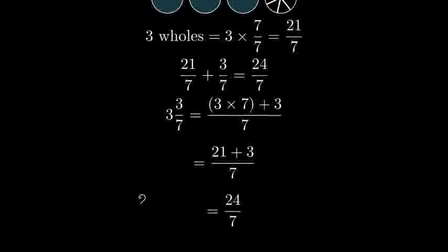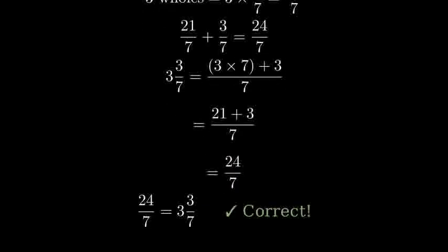Let's verify this is correct. 24 divided by 7 is 3 with a remainder of 3, which means 3 and 3 sevenths. So our conversion is correct.